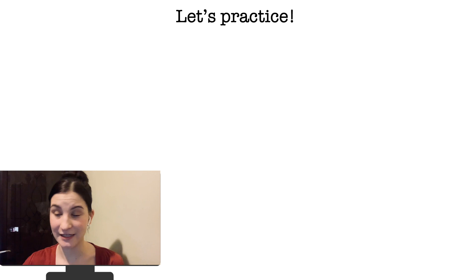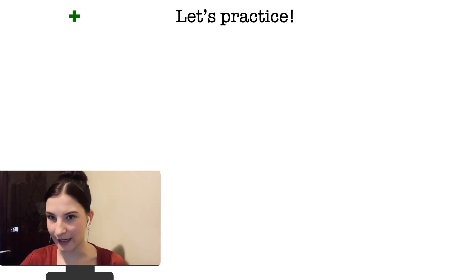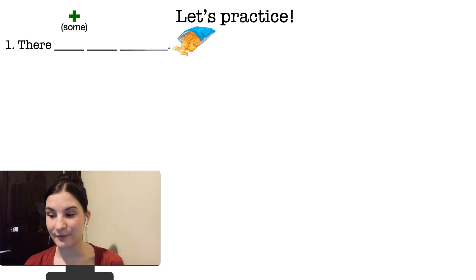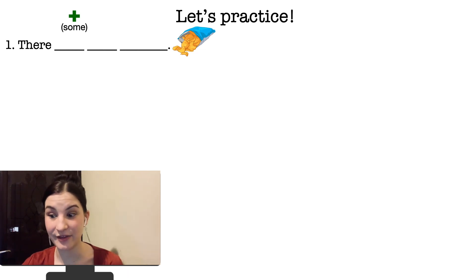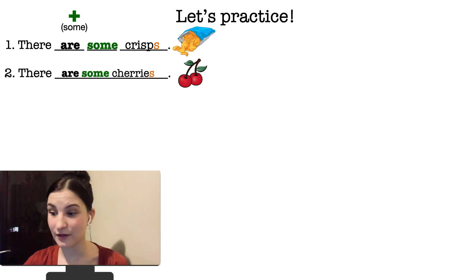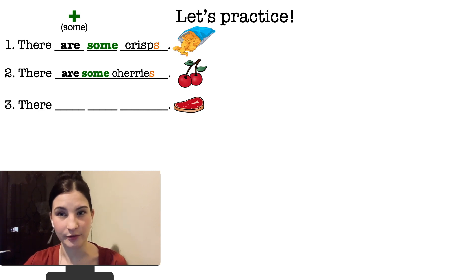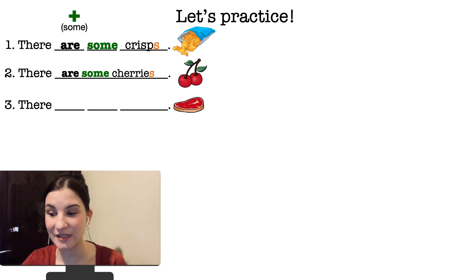Let's practice. We have affirmative sentences — утвердительные — so we use 'some'. Look at the sentence and the picture: you can see crisps. Crisps are countable, so we say 'there are some crisps'. Cherries are countable too, so: 'there are some cherries'. This is meat — meat is uncountable, so: 'there is some meat'. And chocolate is uncountable: 'there is some chocolate'.